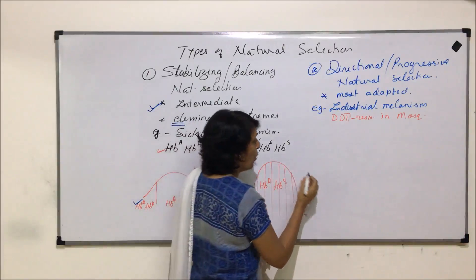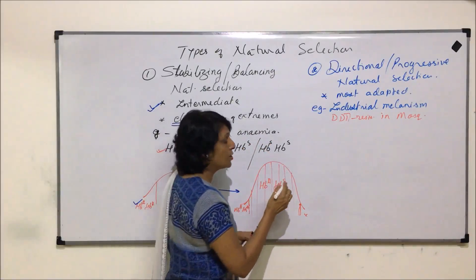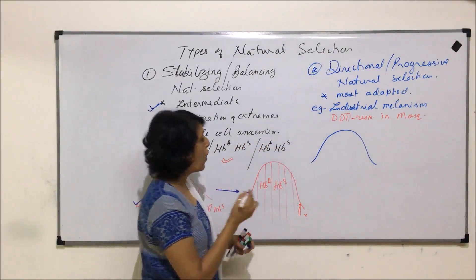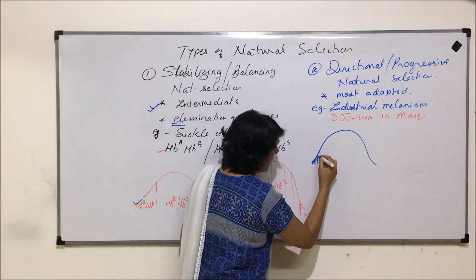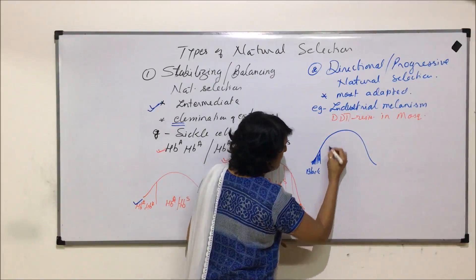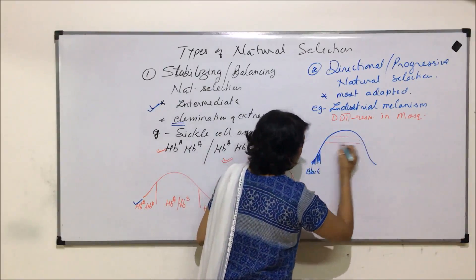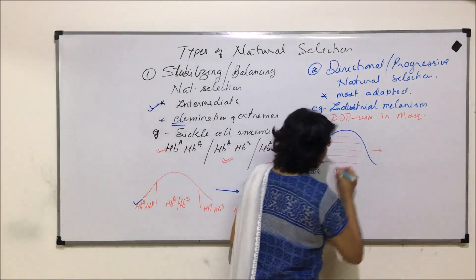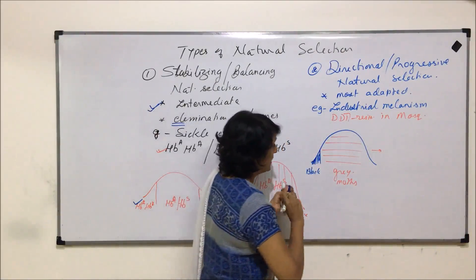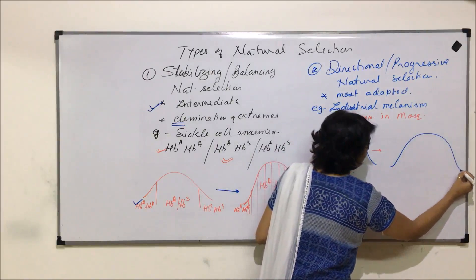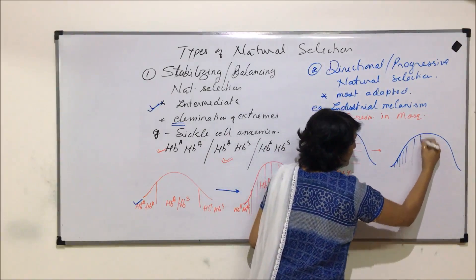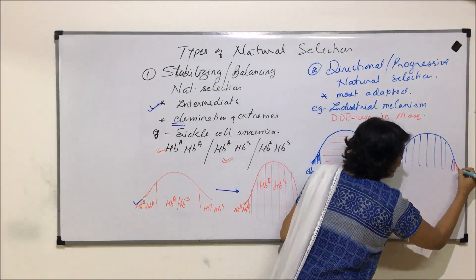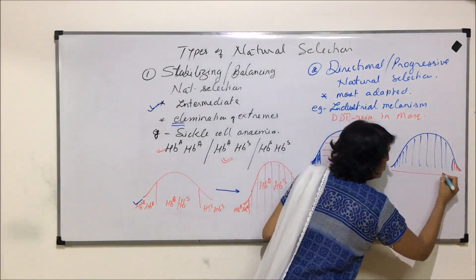Originally, before industrialization in England, the graph showed that the maximum population was of the grey-coloured moth, with the black moth at one extreme. When conditions changed due to industrialization, the graph shifted: the number of black moths became maximum while the number of grey moths became very low.